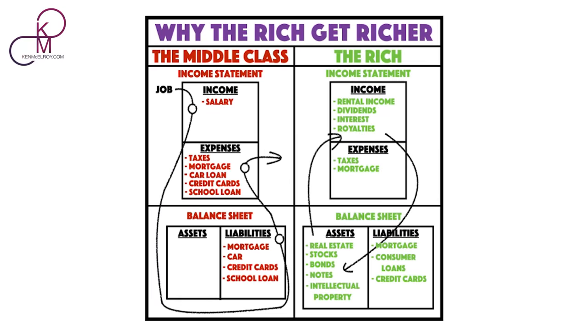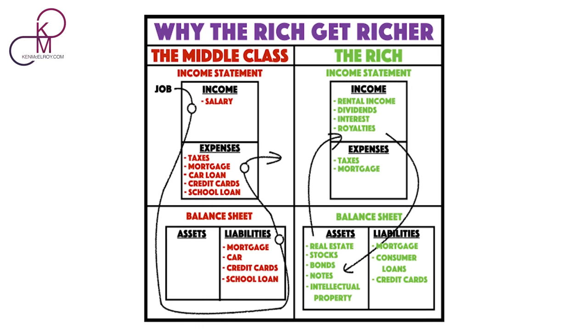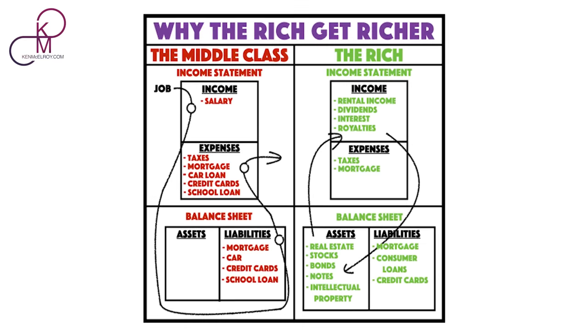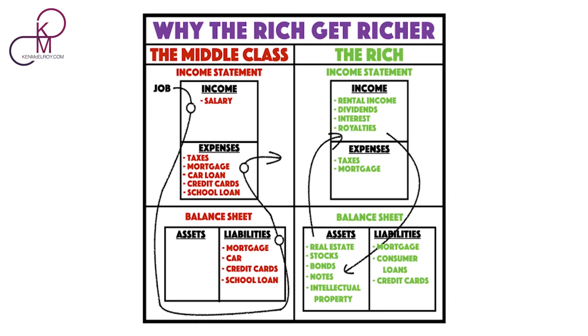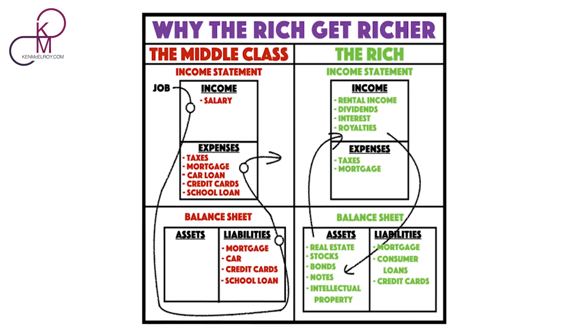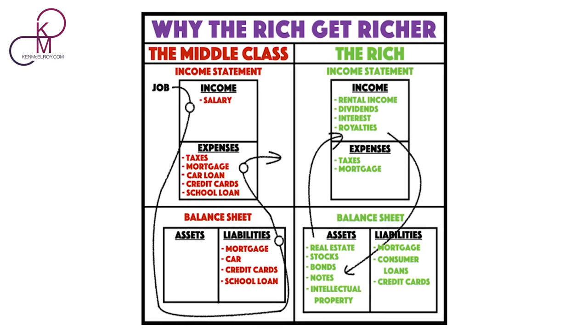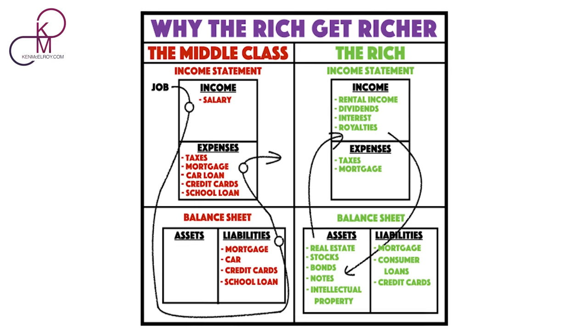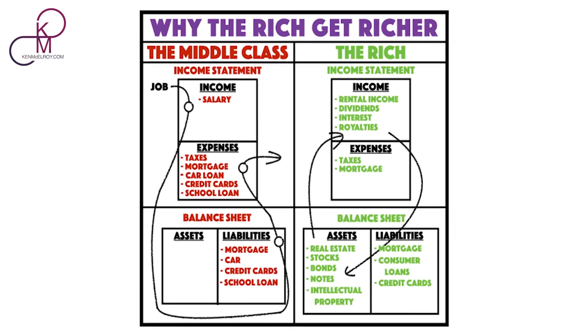People often wonder why the rich get richer, and I put this into a graphic. It starts with a job, salary, or hourly wage, and transfers over to mostly liabilities — cars, credit cards, or student loans, for example. If they have any money left over, perhaps they're putting it into some kind of savings account, which is getting annihilated by inflation. To the right, you will see the flow of money from the rich. The rich buy things like real estate, stocks, bonds, notes, and intellectual property.